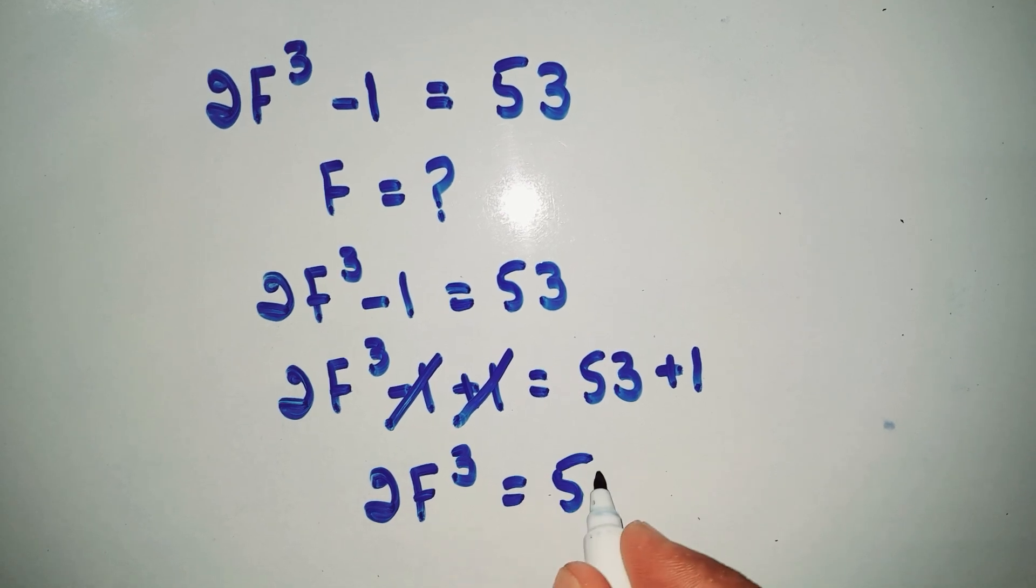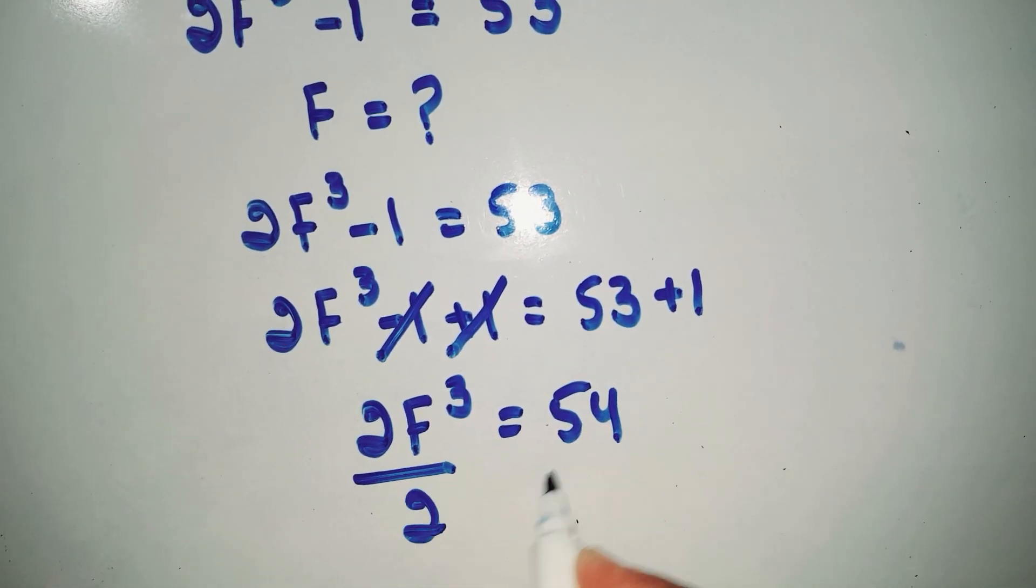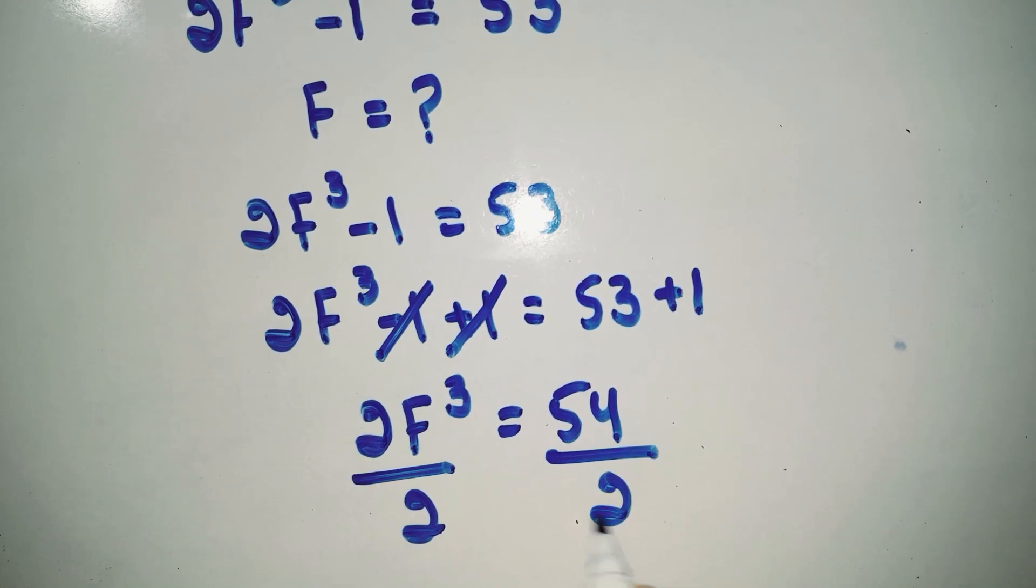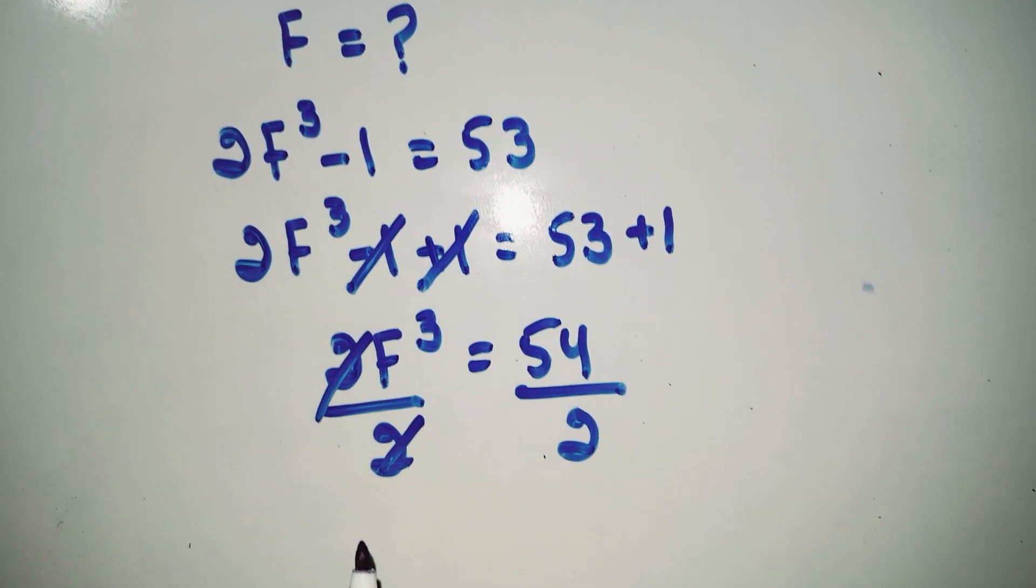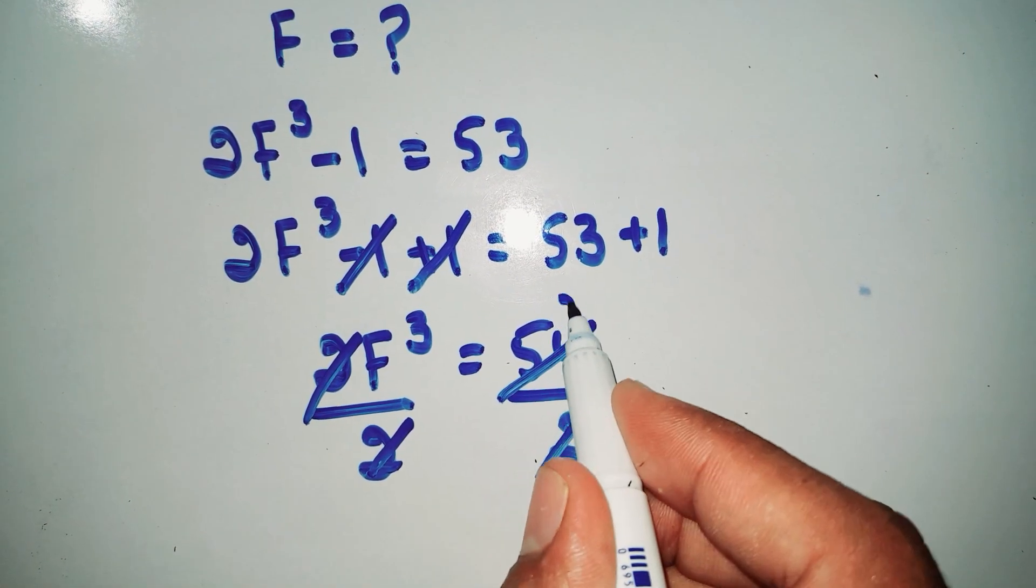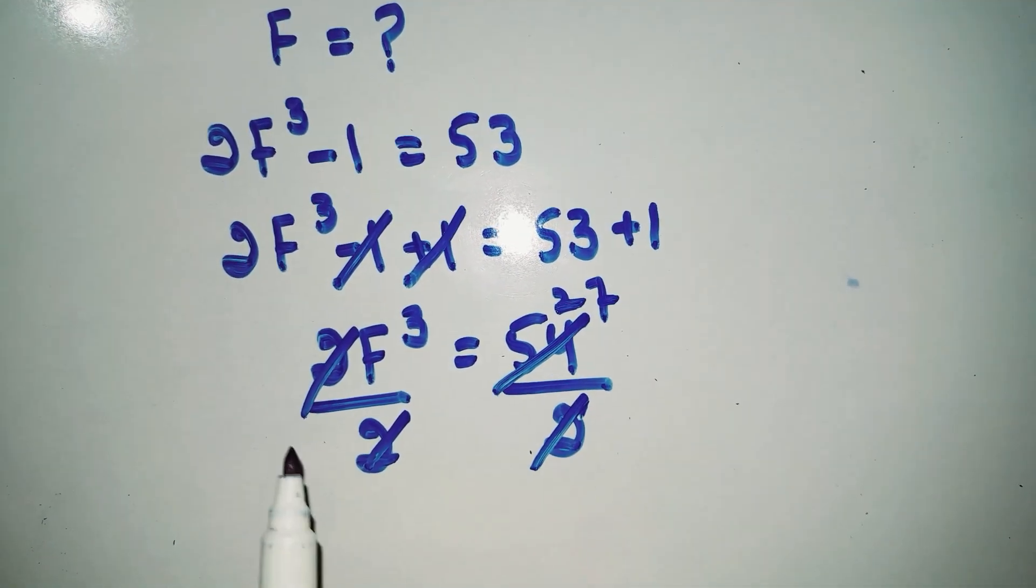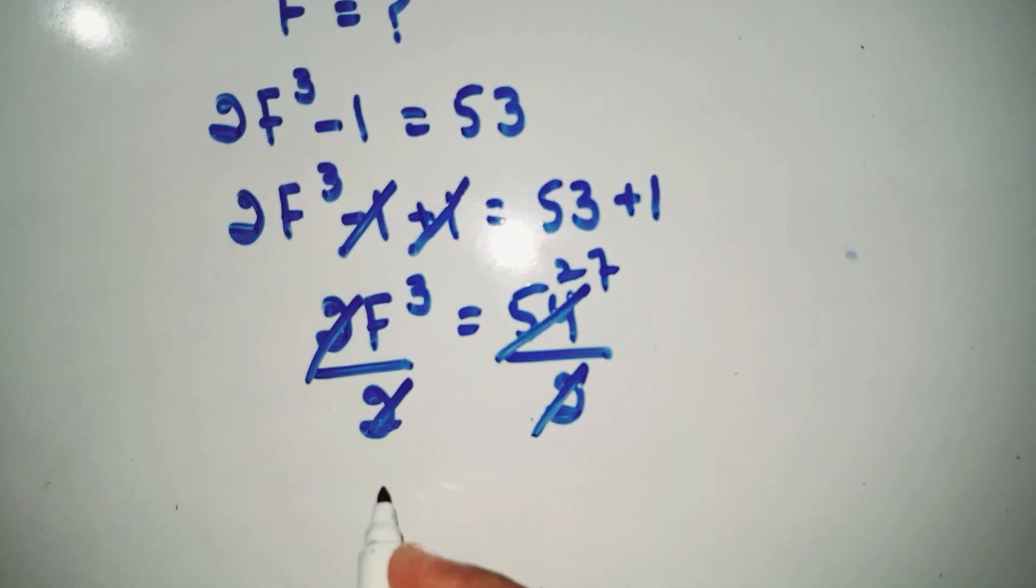Now we divide both sides by 2. Divide this side and divide this side. So 2 and 2 cancel out. And now 2 into 27 is 54.